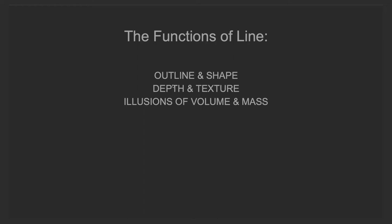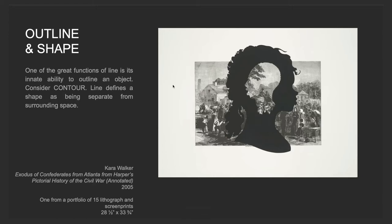What are the functions of a line? Lines outline and shape. They show depth and texture. They show illusions of volume and mass. One of the great functions of line is its innate ability to outline an object — consider contour lines. Line defines a shape as being separate from surrounding space. Here we have an image where this black silhouette is imposed on top of that image — this is an outline of a shape. And then there's another outline of another silhouette reversed, looking the other direction.